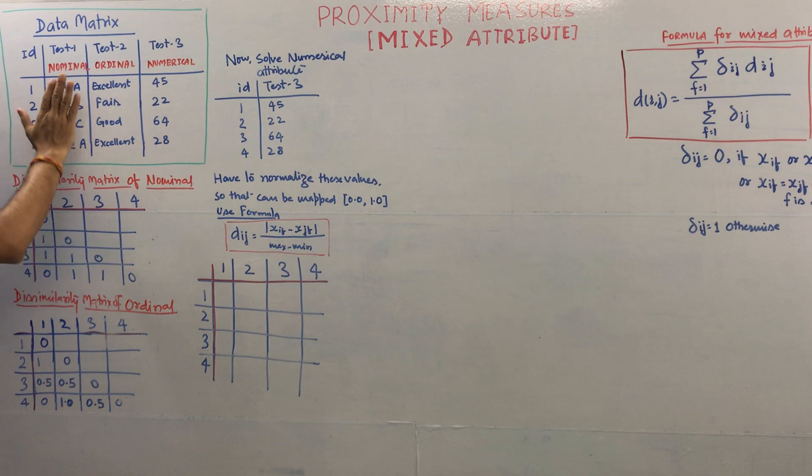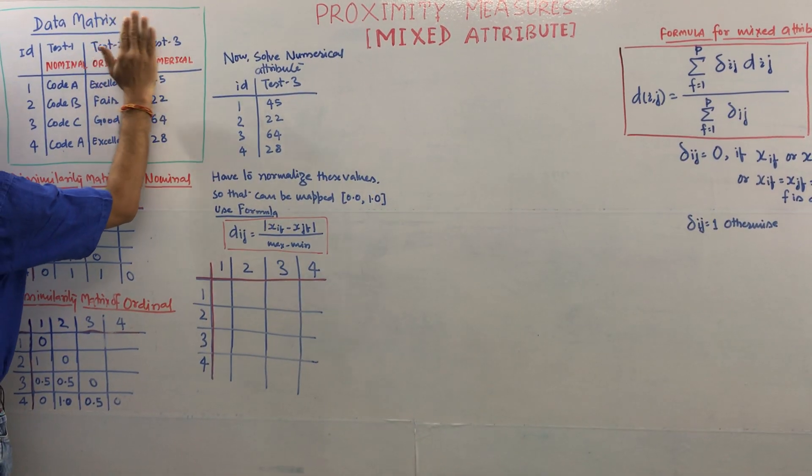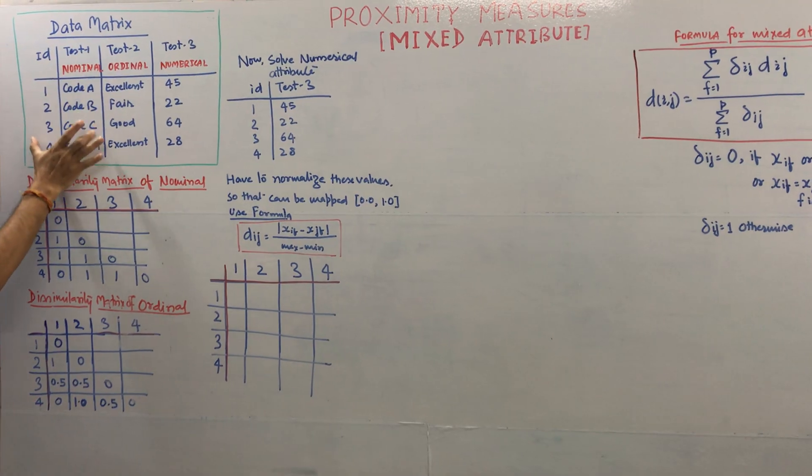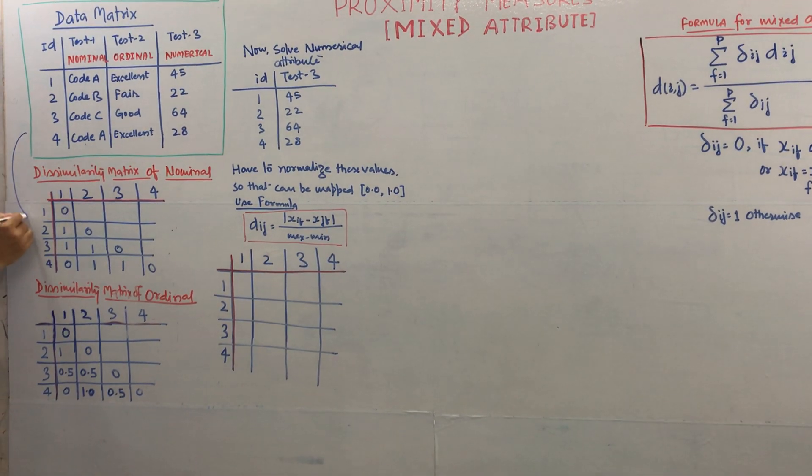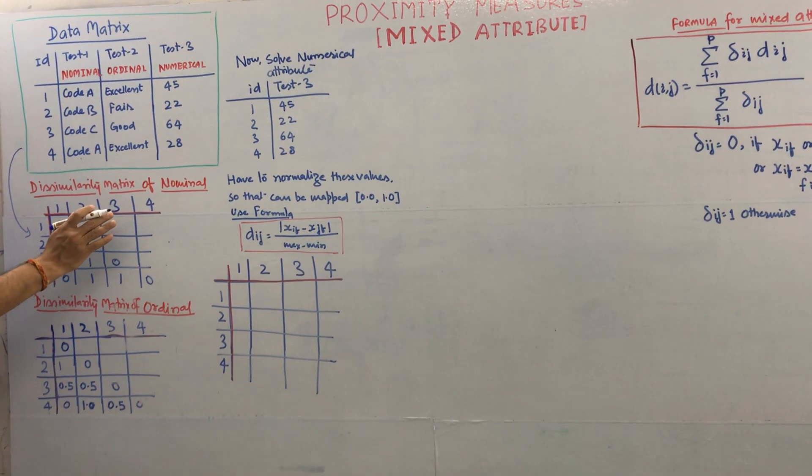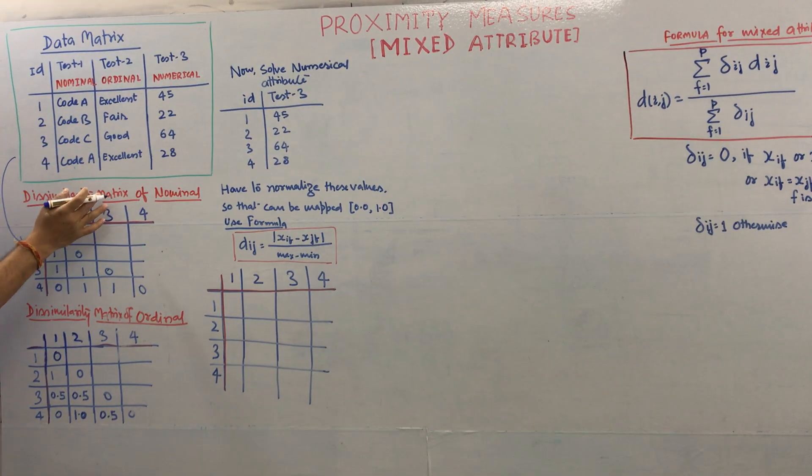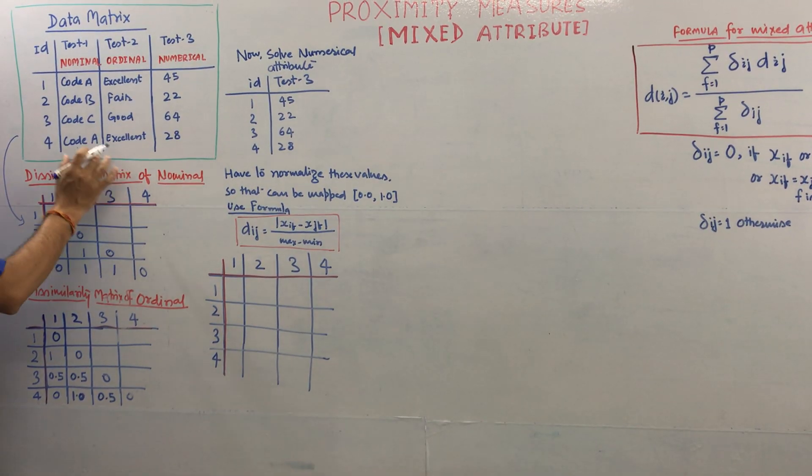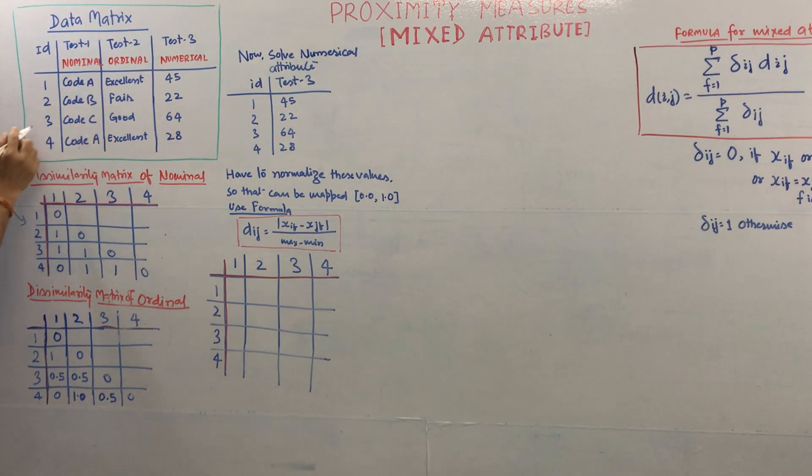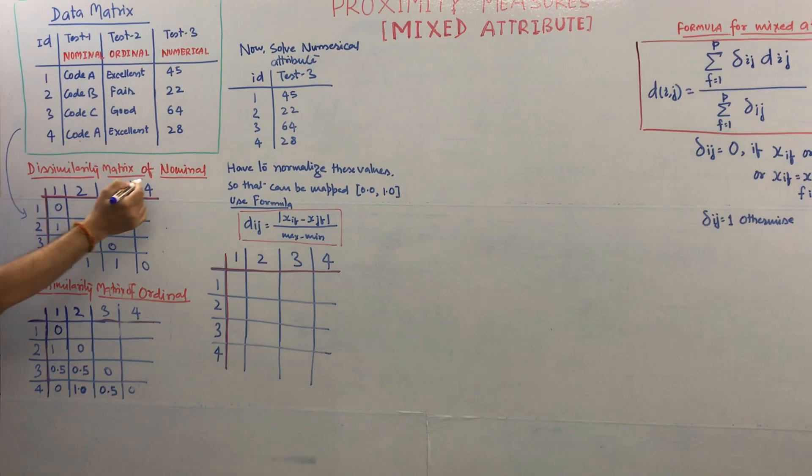First you assume that you have only the nominal data, you assume you do not have these two data types, just this data. For the nominal you find out the dissimilarity matrix. Please visit my previous video where I have already explained in detail how to find out the nominal dissimilarity matrix. From this part we find out this matrix for the nominal.